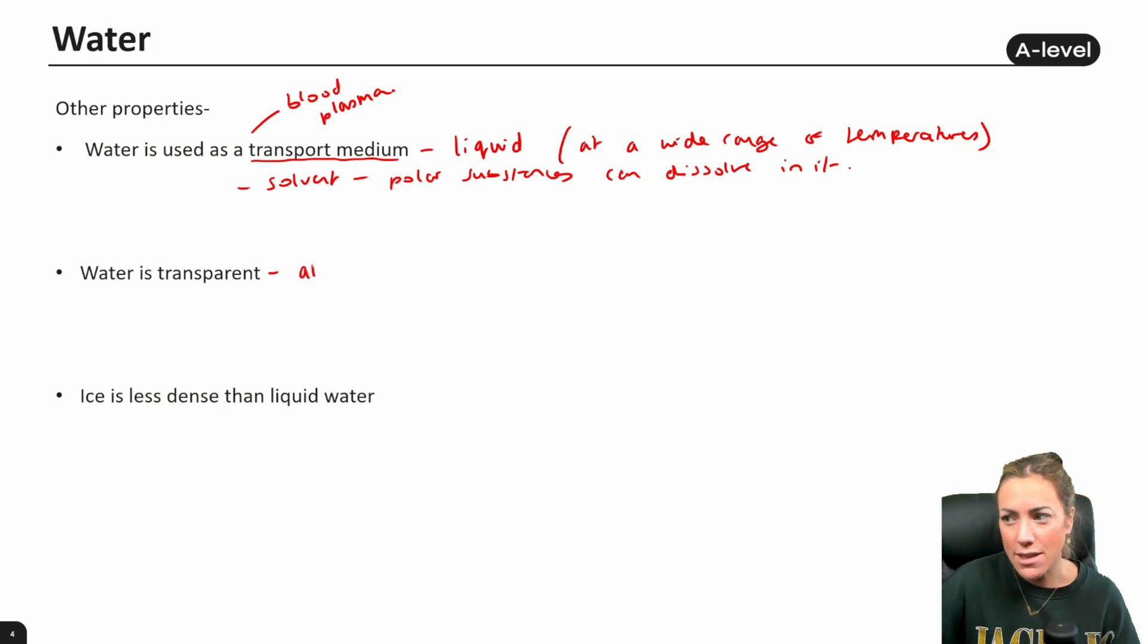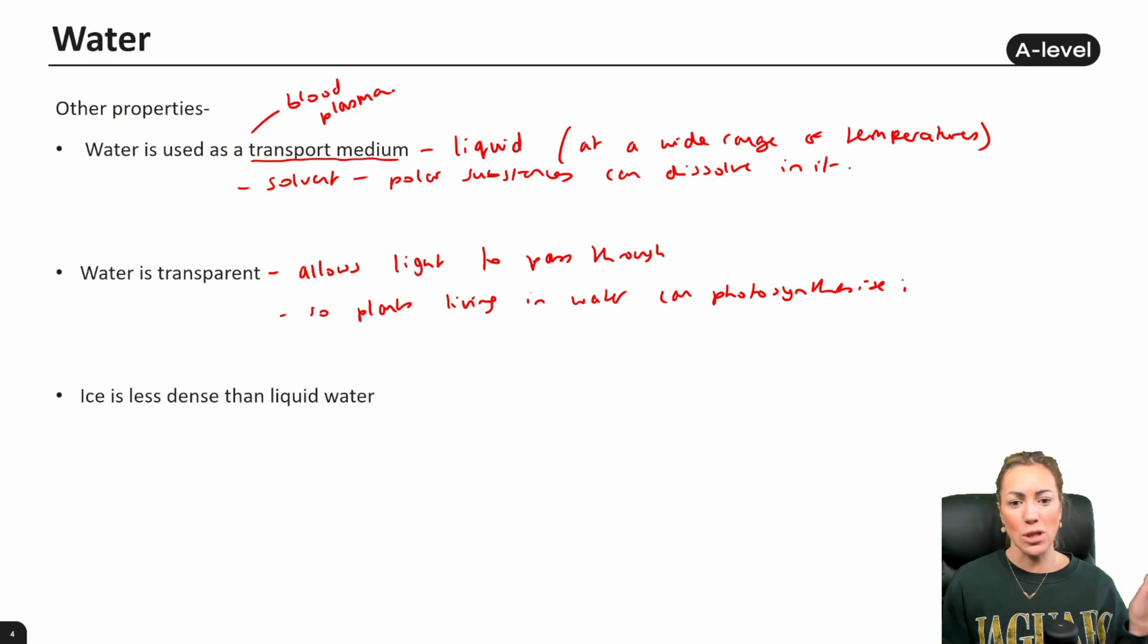Water is transparent, so this could be linked to an advantage. It allows light to pass through, or penetrate, so plants living in water can photosynthesize. So think about plants at the bottom of lakes, or ponds, or aquatic plants. If water was not transparent, water would not allow light to pass through, and then these plants would not be able to absorb light and photosynthesize to make glucose. So that is another property that is linked to an advantage.